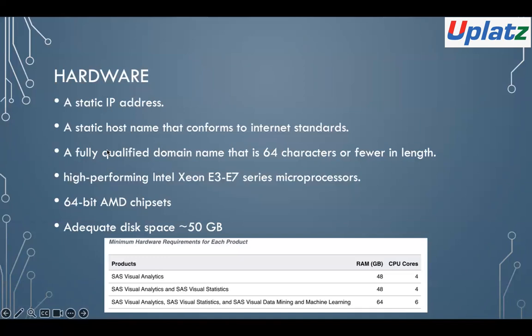For CPU and RAM, SAS has undergone rigorous performance testing with various hardware combinations. It is recommended to use a high-performing Intel Xeon E3/E7 series microprocessor. SAS Viya has also been tested with Intel Xeon Scalable processors for scalable environments. SAS also recommends and supports 64-bit AMD chipsets — 32-bit chipsets are not supported. 64-bit is the required recommendation.